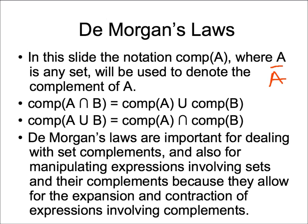DeMorgan's laws are important for dealing with set complements and for manipulating expressions involving sets and their complements, because they allow for the expansion and contraction of expressions involving complements. This law states that the complement of the intersection of set A and B is the same as the union of complement A and complement B. And on the other hand, the complement of the union of set A and B is the same as the intersection of complement A and complement B.